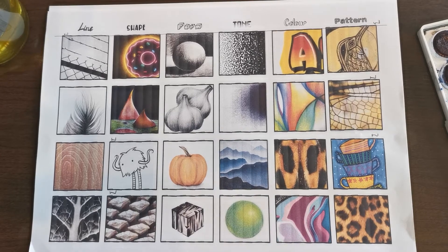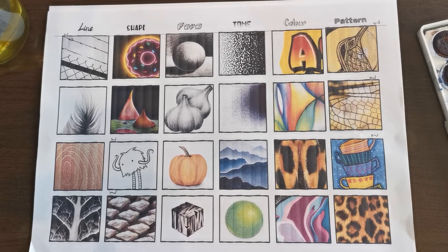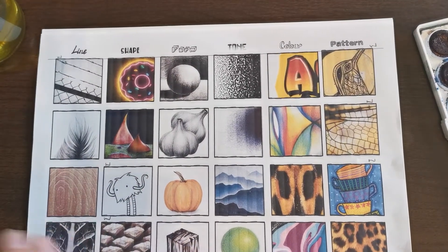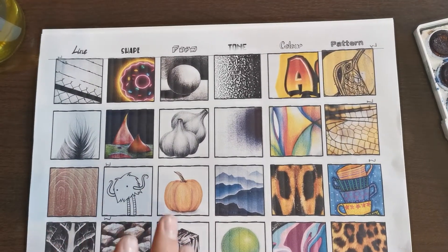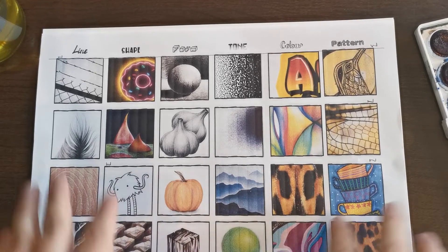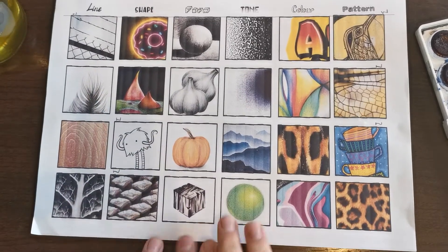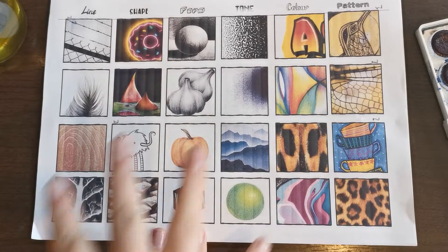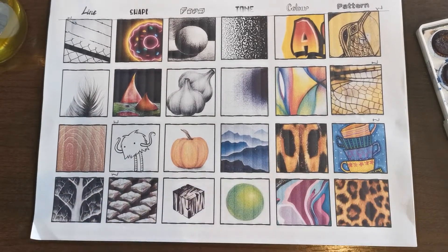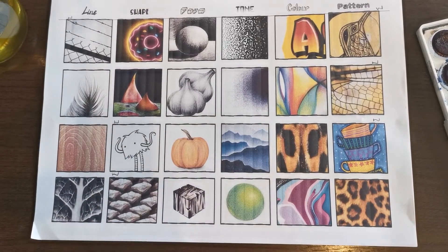Over the next few lessons, we're going to take a deeper look at our formal elements, which are line, shape, form, tone, colour, pattern and texture. We're going to produce a number of mini pieces of artwork that look specifically at the formal elements themselves.